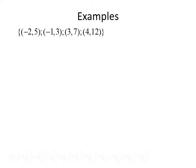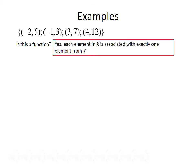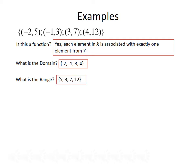Let's look at a couple more examples. This time, our information are ordered pairs. We have the points (-2, 5), (-1, 3), (3, 7), and (4, 12). The domain, or x values, will just be the x coordinates, and the range, or y values, will be the y coordinates. Do these points represent a function? And the answer is yes, since each element in x is associated with only one element from y. The domain is {-2, -1, 3, 4} and the range is {5, 3, 7, 12}.